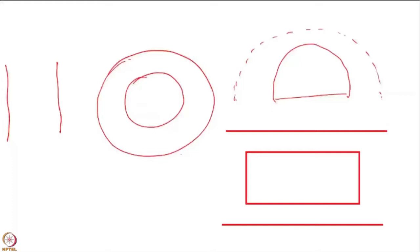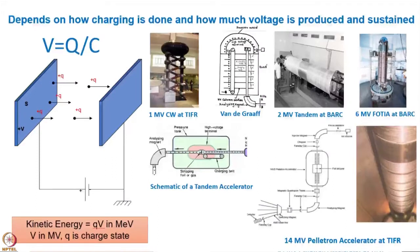In the case of Cockcroft-Walton, we are directly using capacitors, and those capacitors are charged through diodes. They can also be charged through resistors, but charging through diodes has advantages, as you will see in subsequent slides. These are some of the things we have to understand before going to the accelerators. The first one shown is a Cockcroft-Walton — a picture of the one million volt Cockcroft-Walton at Tata Institute of Fundamental Research, which was set up in the late fifties.